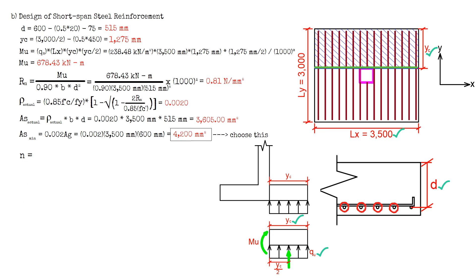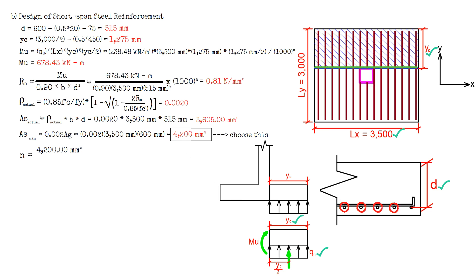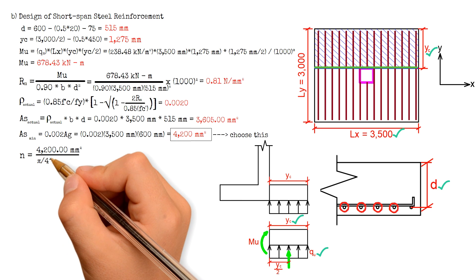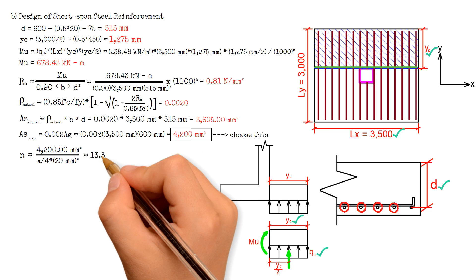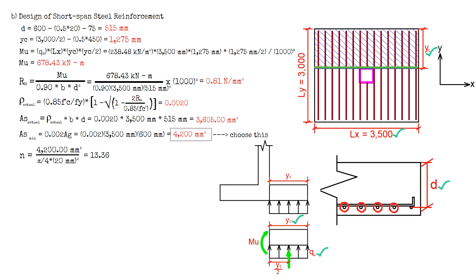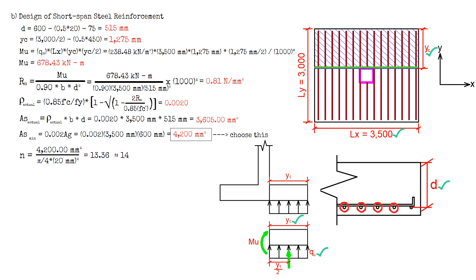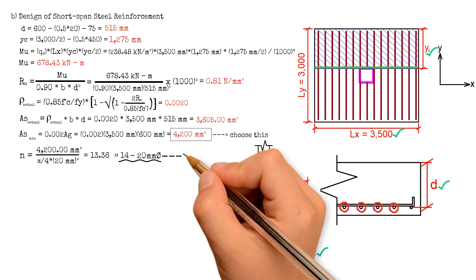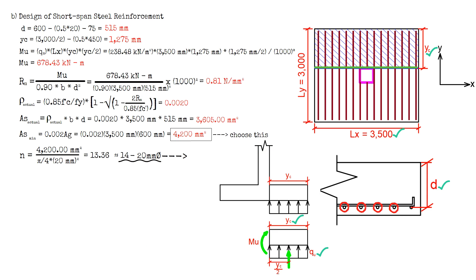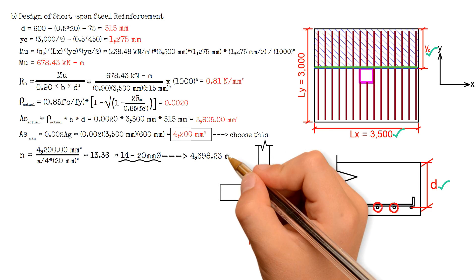To calculate for the number of short span steel reinforcement, we divide 4,200 square millimeters by pi over 4 times the square of the diameter 20 mm. The result is 13.36, rounded up to 14. The short span steel reinforcement would be 14 pieces of 20 mm diameter rebars, with a corresponding total area of 4,398.23 square millimeters.